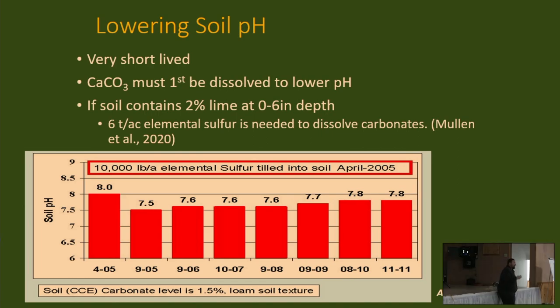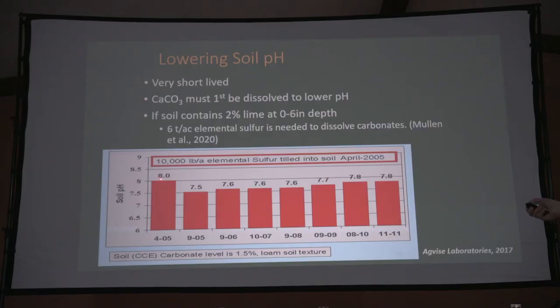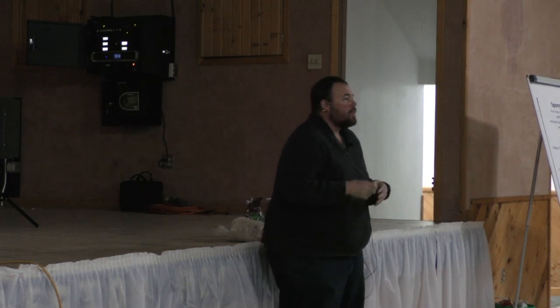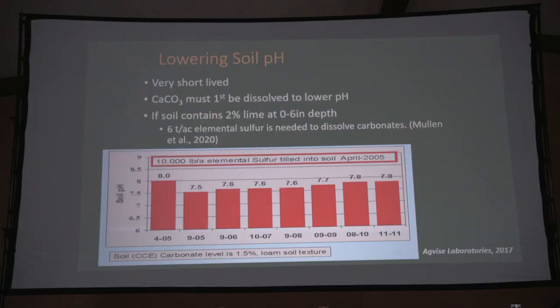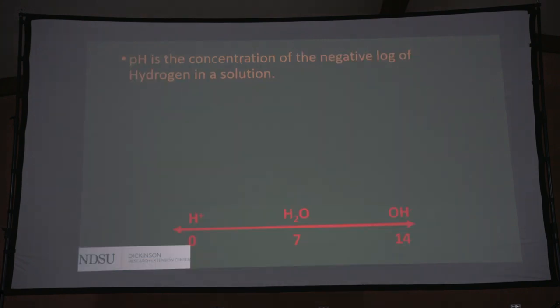In some instances, you can purposely lower your soil pH by adding elemental sulfur. Agvice up in Northwood tried this and added 10,000 pounds of elemental sulfur. They started with a pH of 8, decreased it to 7.5 a few months later, but it went back up because there's a lot of calcium carbonate present in the soil. Until you dissolve all of that calcium carbonate — which is limestone — the pH acidity is not going to decrease. We can't really effectively or agronomically lower our pH at a field scale. When we're talking thousands of acres, it's not economically feasible.